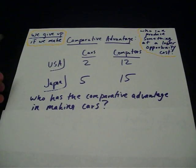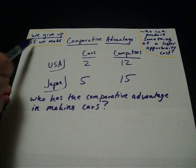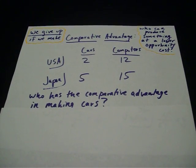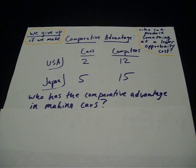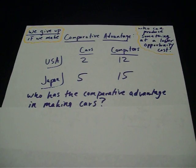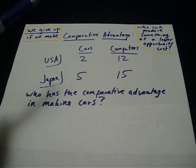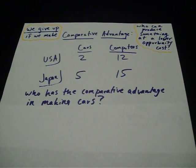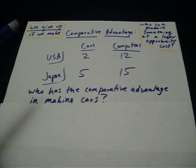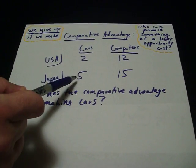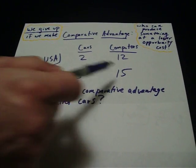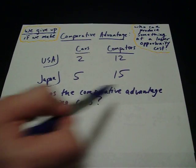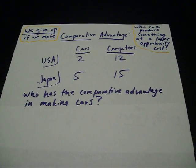The formula you'll use is: we give up over if we make. Here's an example of the kind of question you might get on the AP Microeconomics test. The United States, in one hour, can produce two cars or 12 computers. Japan can produce in one hour either five cars or 15 computers. The question asked is: who has the comparative advantage in making cars?